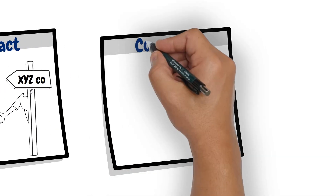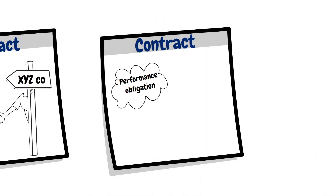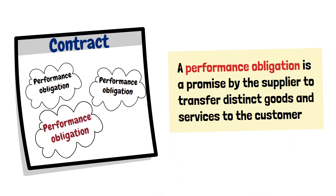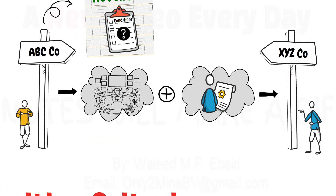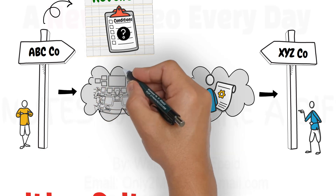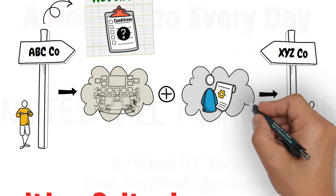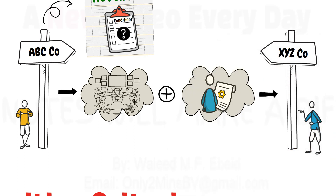The second condition: the contract should include one or more performance obligations. A performance obligation is a promise by the supplier to transfer distinct goods and services to the customer. In our example, we have two performance obligations in the contract. The first obligation is the installation of the security system, and the second obligation is the maintenance services to be provided by ABC Co.